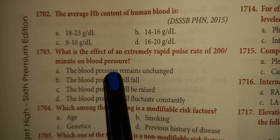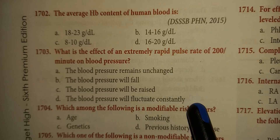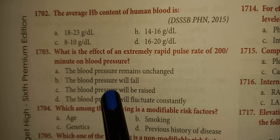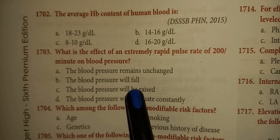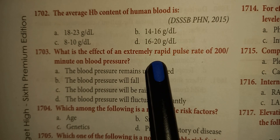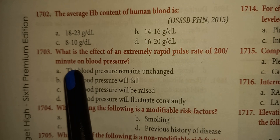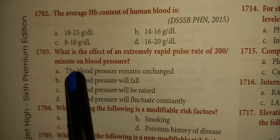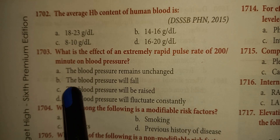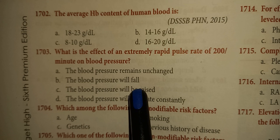What is the effect of an extremely rapid pulse rate of 200 per minute on blood pressure? Answer: B. The blood pressure will fall.